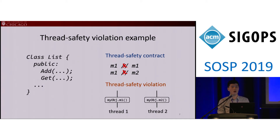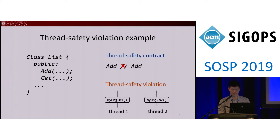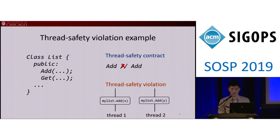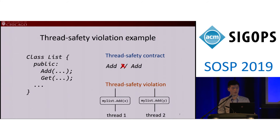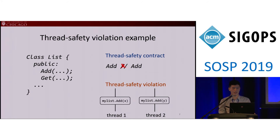Let's take an example. In C#, there is a widely used class called List in the collection namespace. The C# documentation explicitly says that two add functions cannot be invoked concurrently on the same list — otherwise, a thread safety violation will happen and one element will be lost. Such violations widely exist in practice. In 999 testing runs, two concurrent calls may execute one after another, but in one production run, they execute at the same time, causing huge problems like Bitcoin loss.